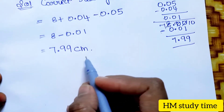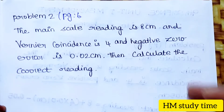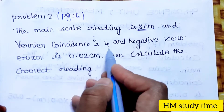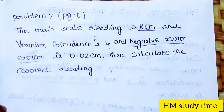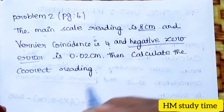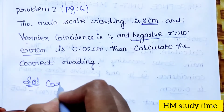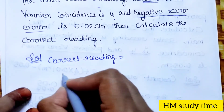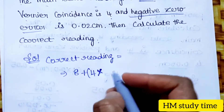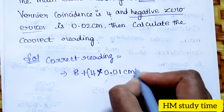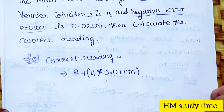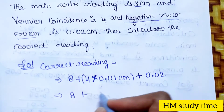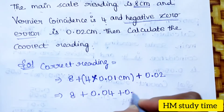Second problem: the main scale reading is 8 cm, Vernier coincidence is 4, and the zero error is negative. Calculate the correct reading. Solution: correct reading equals 8 plus 4 into 0.01 cm, and the negative zero error becomes plus 0.02.